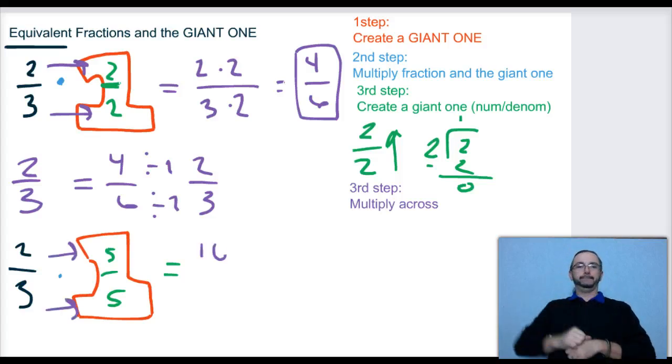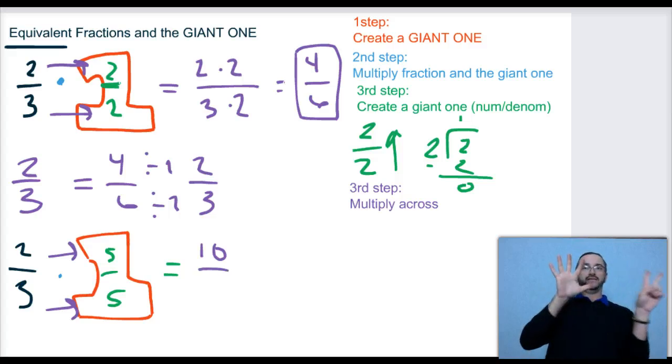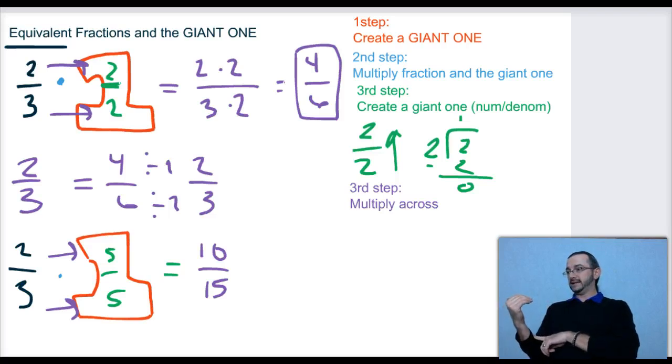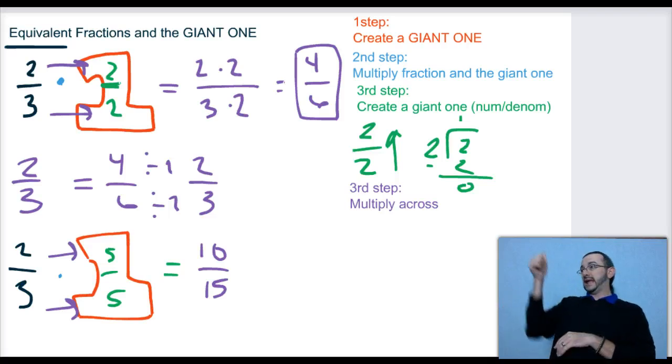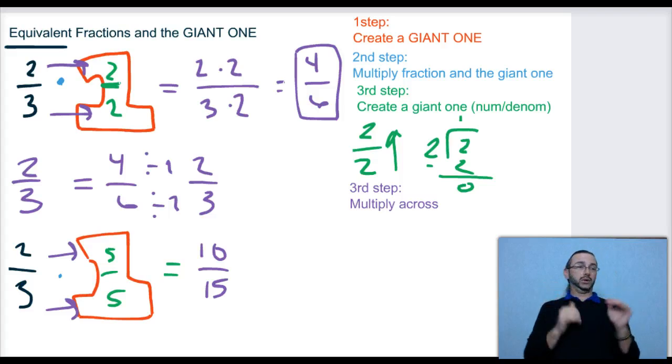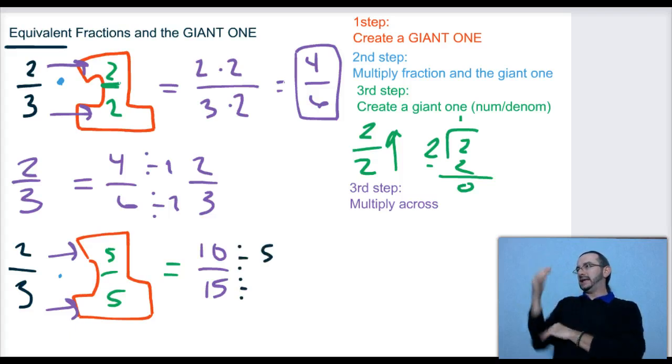2 times 5 equals 10, and 3 times 5 equals 15. Now, let's see if we made an equivalent fraction. What can go into 10 and into 15? Well, if I think about it, 5 can go into both. So I divide both by 5.